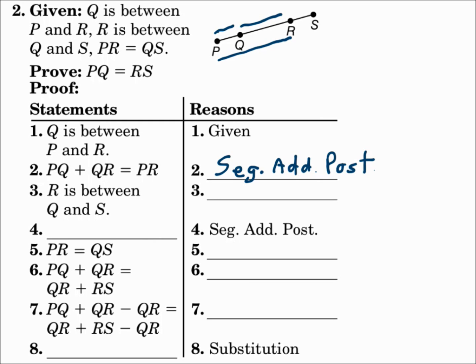Then they give the next given statement: R is between Q and S. And since they gave us that, the reason is also given. Then they give us the reason segment addition postulate. Using the previous statement, since R is between Q and S, that means QR plus RS equals QS.